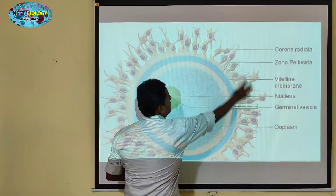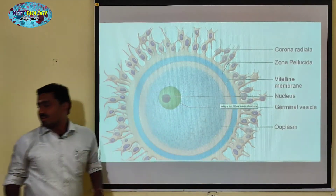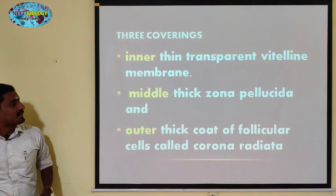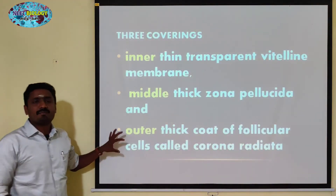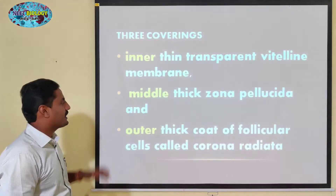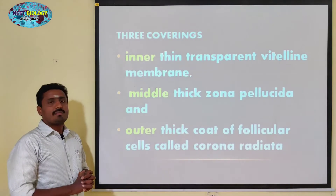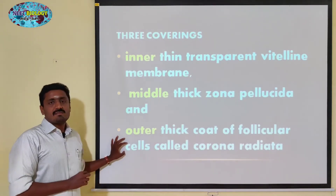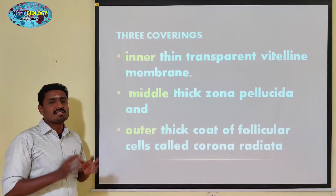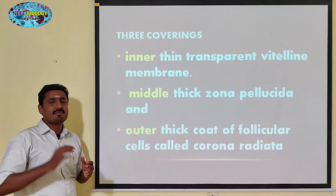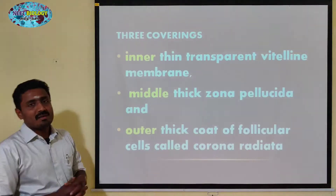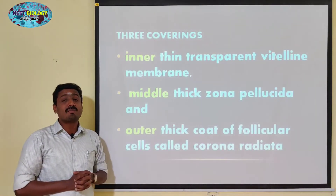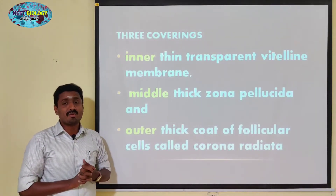This is the zona pellucida. Outside of it is the corona radiata — the outer thick coat of follicular cells. These follicular cells surround the primary follicle and secondary follicle.